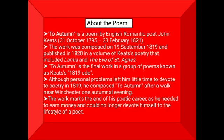Now we come to the poem Ode to Autumn. To Autumn is a poem by English Romantic poet John Keats. The work was composed on 19 September 1819 and published in 1820 in a volume of Keats' poetry that included Lamia and The Eve of St. Agnes. To Autumn is the final work in a group of poems known as Keats' 1819 Odes. Although personal problems left him little time to devote to poetry in 1819, he composed To Autumn after a walk near Winchester one autumn evening.